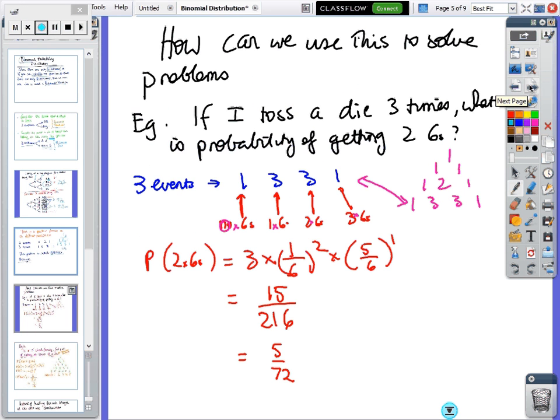How do we use this to solve problems? If I toss a die three times, what's the probability of getting two sixes? We've got three tosses, so we're on this line here. This is like no tosses, one toss, two tosses, three tosses, so we're on this line.